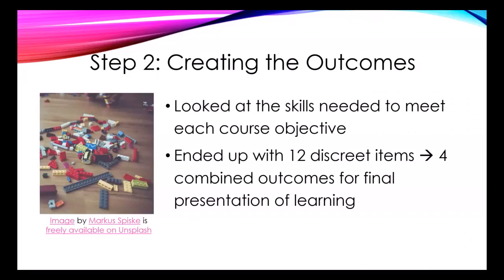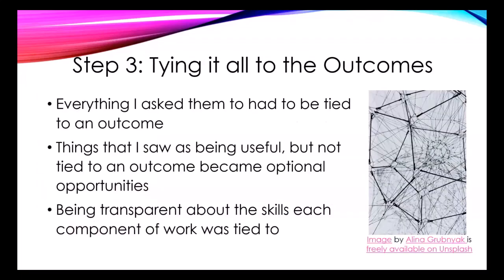The next step, after talking with Amanda about what she was doing, was to think about the skills I wanted my students to leave the course with. I broke down the course objectives into 12 discrete skills — that was a lot at the end, so I combined those into four major categories. Then I went through the course and everything I asked them to do had to be tied to one of those 12 outcomes, so they could see the purpose. If something in the course was useful but wasn't tied to one of those outcomes, I made it optional.